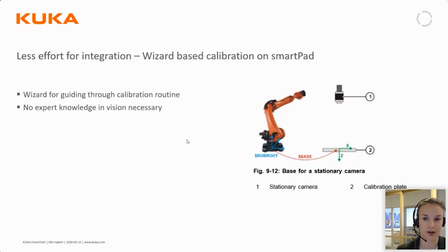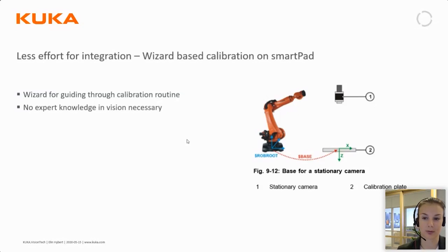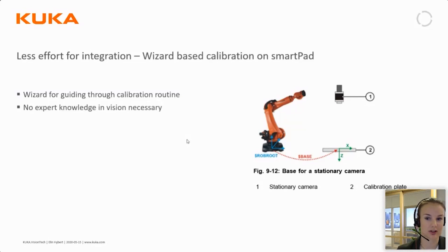If you have a stationary camera, you perform the calibration with the calibration plate on the robot, and vice versa. To do this calibration, it's quite self-guiding and you need no expert knowledge in vision to do this.